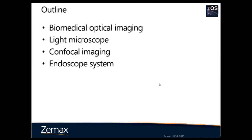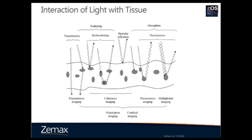To design a medical imaging system, you need to understand the mechanism for each image modality. When we illuminate tissue, some light transmits through without scattering. Most transmitted light undergoes more than one scattering event. Some light is backscattered, a few percent reflects from the tissue surface as spectral reflection, and the rest is absorbed. That energy is either transferred to heat or excites fluorescence through one or more photon absorptions. All these phenomena have been used in biomedical imaging.